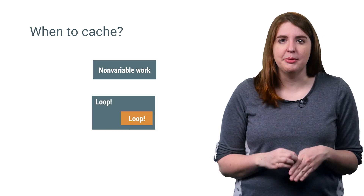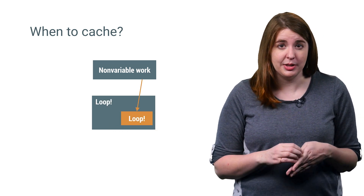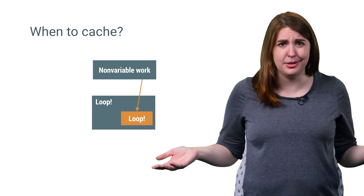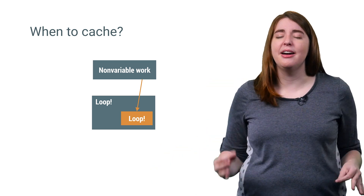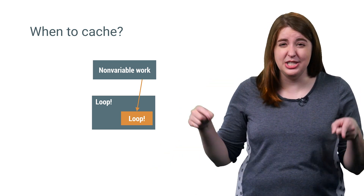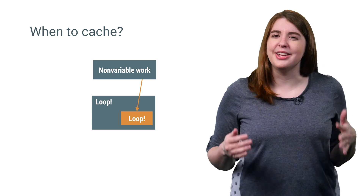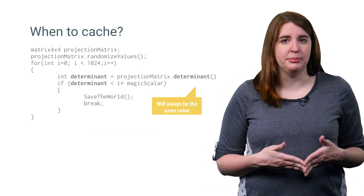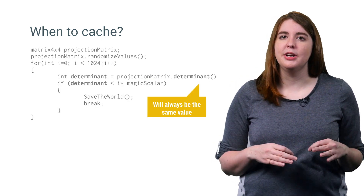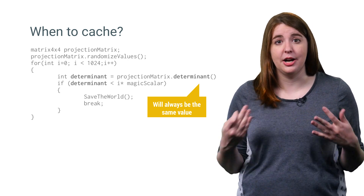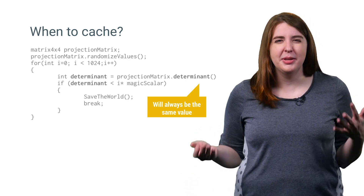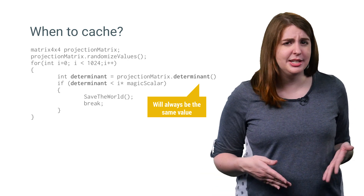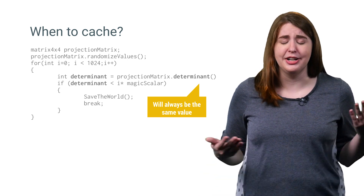In your app, the most common place where you can win with caching is when you have data that is calculated multiple times but the result is always the same. No one would argue to move non-variable work into an inner loop, but it may surprise you how easy it is to do this by mistake. Consider a simple example where you're calculating the derivative of a 4x4 matrix to use when calculating your loop control variable, but that matrix never changes within the loop, so you're actually wasting performance recomputing the derivative on each iteration.